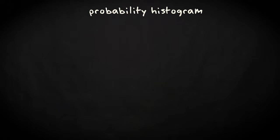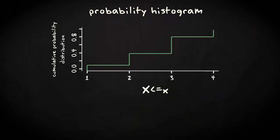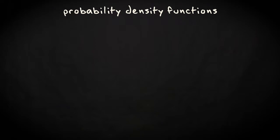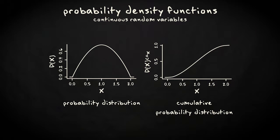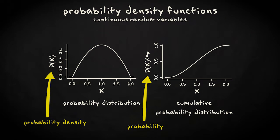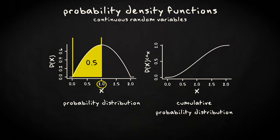The probability histogram for this cumulative probability distribution can be made as well, and looks as follows. Also, probability density functions — the probability distribution for continuous random variables — have a corresponding cumulative distribution. Consider for example this probability density function. The corresponding cumulative distribution is given here. An interesting aspect is that the y variable changes from a probability density to a probability, because in the cumulative distribution it is the area from the smallest value of x up to the value of interest in the probability density function that is put on the y axis.